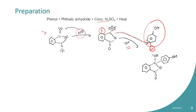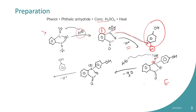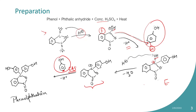Then H⁺ can attack the OH group and water is released, forming a carbocation at that carbon — again an electrophile. A second phenol molecule, activated at the para position, undergoes electrophilic aromatic substitution there, and you get phenolphthalein.